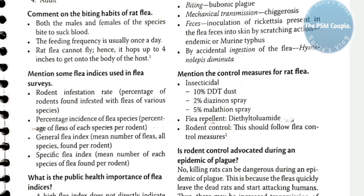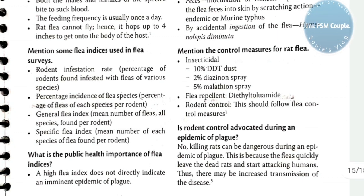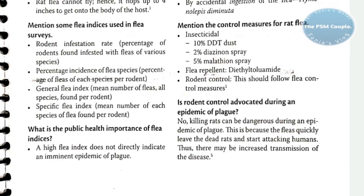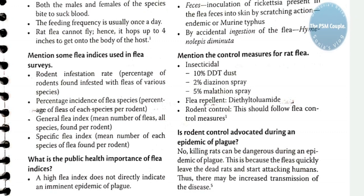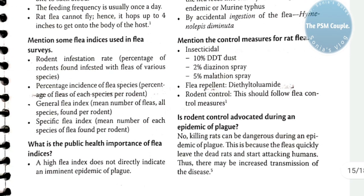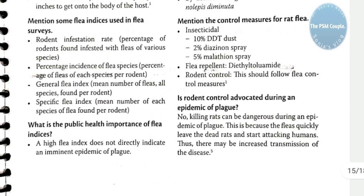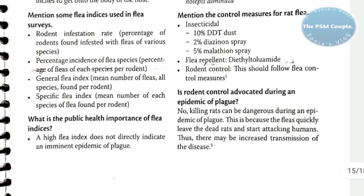Flea indices used in flea surveys are: rodent infestation rate, percentage incidence of flea species, general flea index, and specific flea index. Rodent infestation rate is the percentage of rodents found infested with fleas of various species. Percentage incidence of flea species is the percentage of fleas of each species per rodent. General flea index means the number of fleas of all species found per rodent.